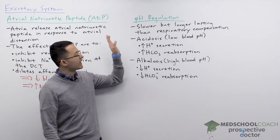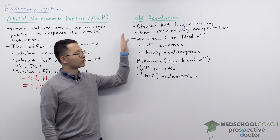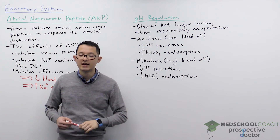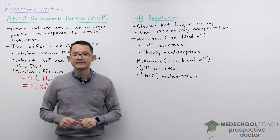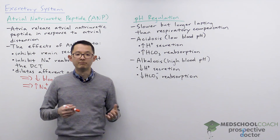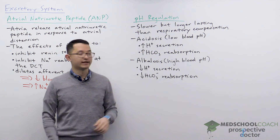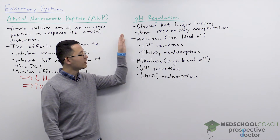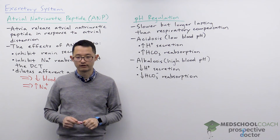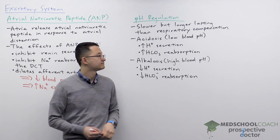That's where we have renal compensation, where the kidneys can help modulate the blood pH. This is slower, but it's also longer lasting.